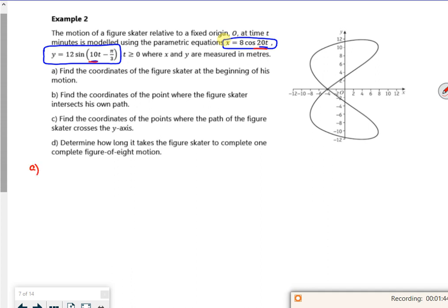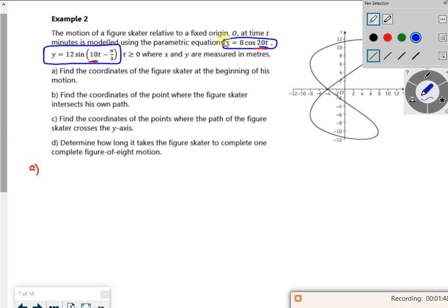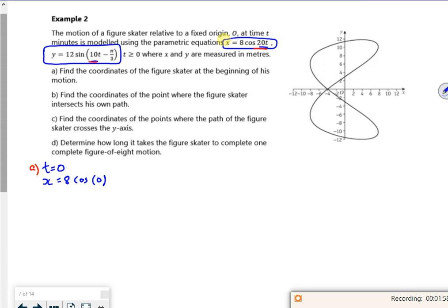Right then, so it says, find it at the beginning of its motion. So let's set t equals zero now. So x is 8 cos of zero, so that's just 8. And y is 12 sin, 10 lots of zero minus pi by 3. If you put that in your calculator, you get minus 6 root 3. So the start point is 8 across and minus 6 root 3 down. That's its start point there.